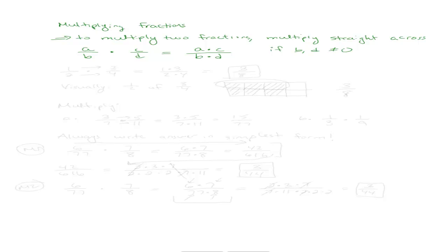So let's look at what that means. Let's say we wanted to multiply one-half times three-quarters. If we're multiplying straight across, I'm just going to multiply one times three, and two times four. One times three is three, and two times four is eight. So the answer is three-eighths — I'm done right there.